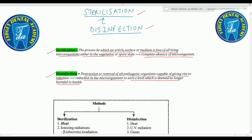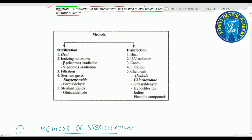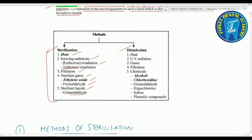Now let's discuss the methods of sterilization and disinfection. Methods of sterilization include: heat, ionizing radiation — which includes beta electron irradiation and gamma photon irradiation — filtration, sterilant gases including ethylene oxide and formaldehyde, and sterilant liquids including glutaraldehyde. Methods of disinfection include: heat, ultraviolet radiation, gases, filtration, and chemicals such as alcohols, chlorhexidine, glutaraldehyde, hypochlorides, iodine, and phenolic compounds.